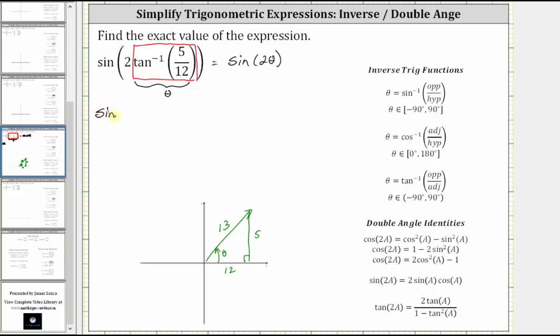Which gives us sine two theta is equal to two times sine theta times cosine theta.